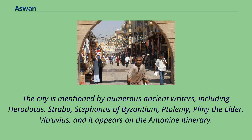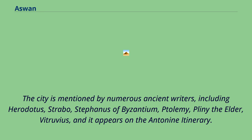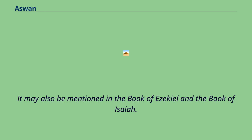The city is mentioned by numerous ancient writers, including Herodotus, Strabo, Stephanus of Byzantium, Ptolemy, Pliny the Elder, and Vitruvius, and it appears on the Antonine Itinerary. It may also be mentioned in the Book of Ezekiel and the Book of Isaiah.